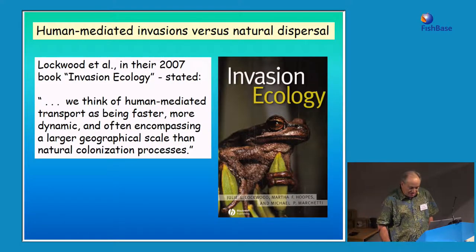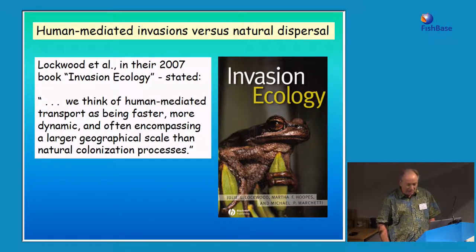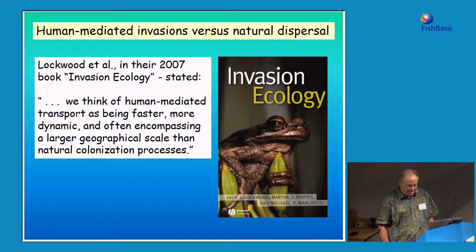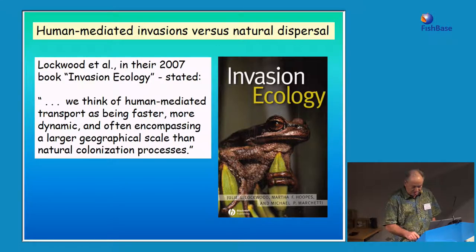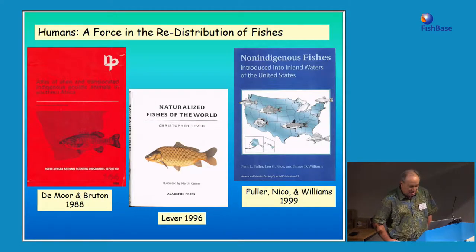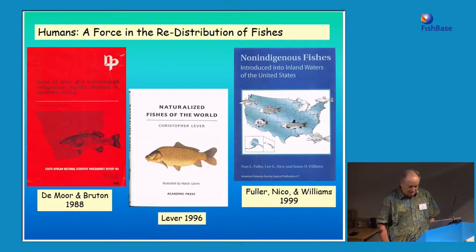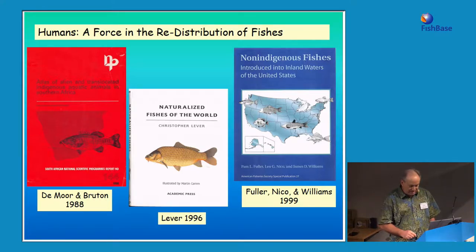However, over the past 150 years, humans have been scrambling the distribution patterns of many fish taxa by moving them around and releasing species into waters where they do not occur naturally. This has resulted in major changes to fish faunas throughout the world, from small drainages to entire continents. Many researchers consider species introductions by humans to be unique; Lockwood et al. in their 2007 book on invasion ecology argue that human-mediated transport is faster, more dynamic, and often encompasses a larger geographic scale than natural animal dispersal. There is even a journal devoted entirely to aquatic invasions.